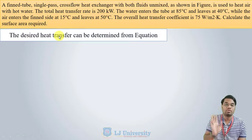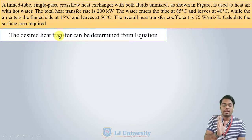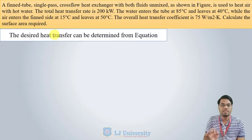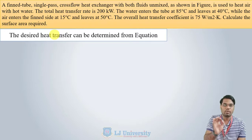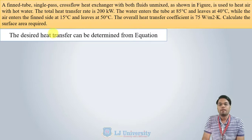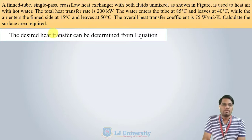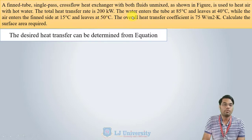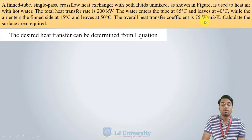We have the equation Q = U·A·ΔT·F. Using that equation we can calculate the required area A. We need the value of Q, which is already given, and U, which is also given. So we need to find F and ΔT.